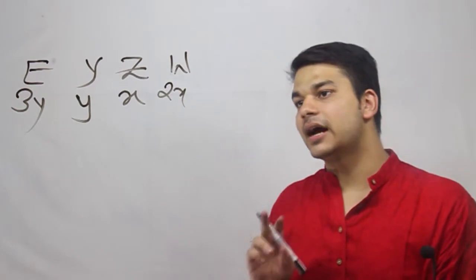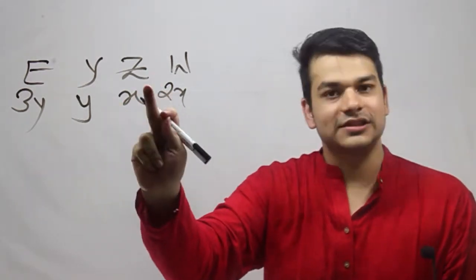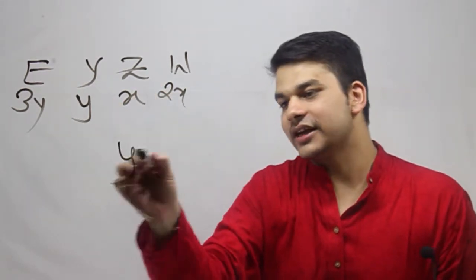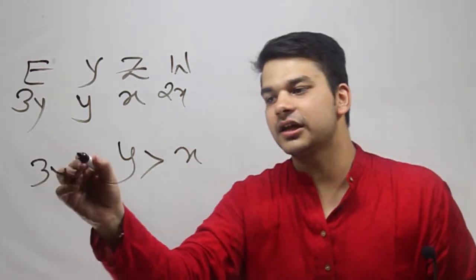And the last condition is given that Yukesh is older than Zaheer. So y is greater than x, obviously 3y will be greater than y.